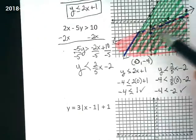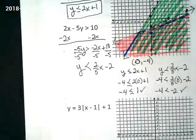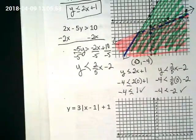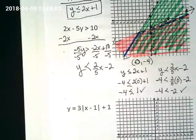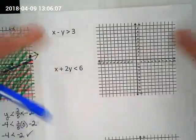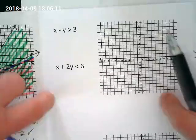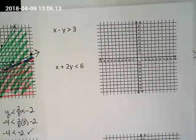That means any other ordered pair we found in this double shaded area, we could plug in and they would be true. Make sense? I'm going to turn off the recording here, and I want you guys, without me, to see if you can do this one, and we'll come back together in about 4 minutes.